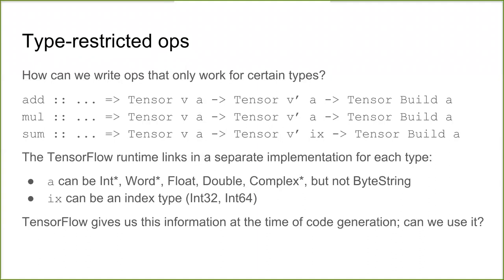Many ops are more restrictive. Adding two tensors is okay for floats or ints, but not for strings. And there are even more restrictive ops like `sum`, which reduces a tensor along certain dimensions: the first type parameter A must be something addable, while the index type IX can only be Int32 or Int64. We get from TensorFlow at code generation time an explicit list of which types each op supports. One approach — which we don't use — would be to generate a separate typeclass for every op, like an `AddType` class or a `SumIxType` class. The problem is these classes leak out into type signatures and reduce code reusability.